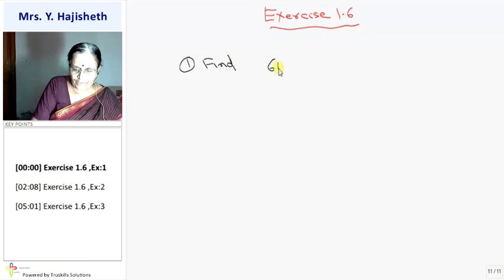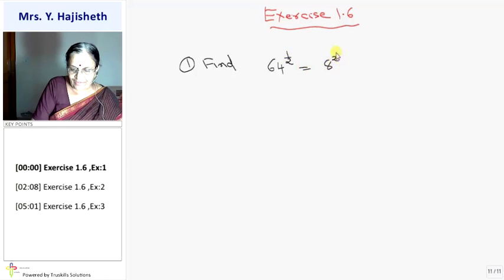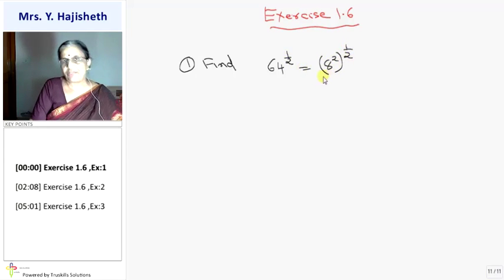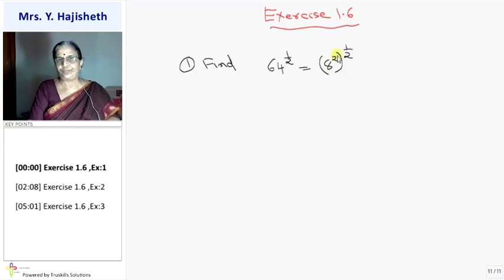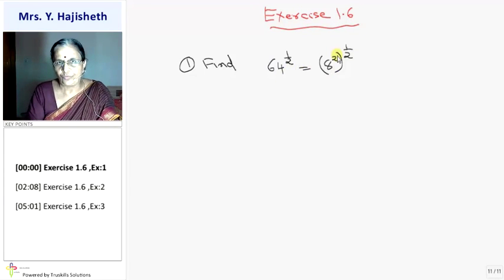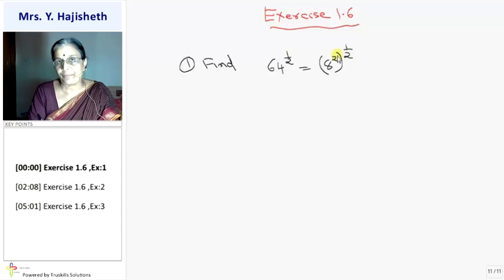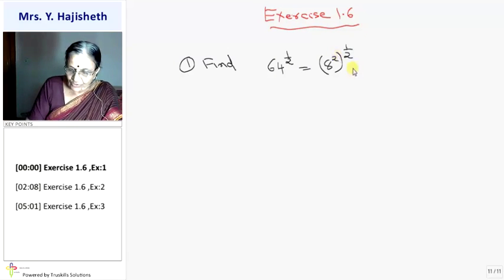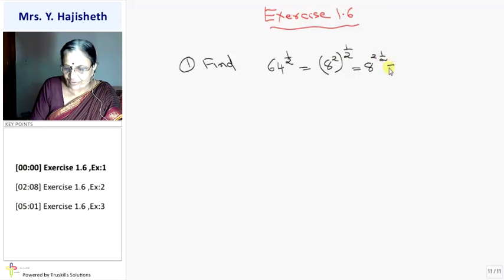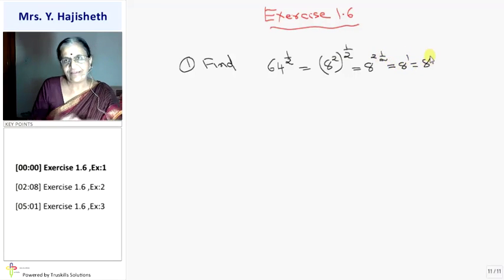Find 64 raised to 1 half. I write it as 8 squared raised to 1 half, because 64 is 8 squared. So it is 8 raised to 2 into 1 half, using the law of exponents. That gives 8 raised to 1, so the answer is 8.